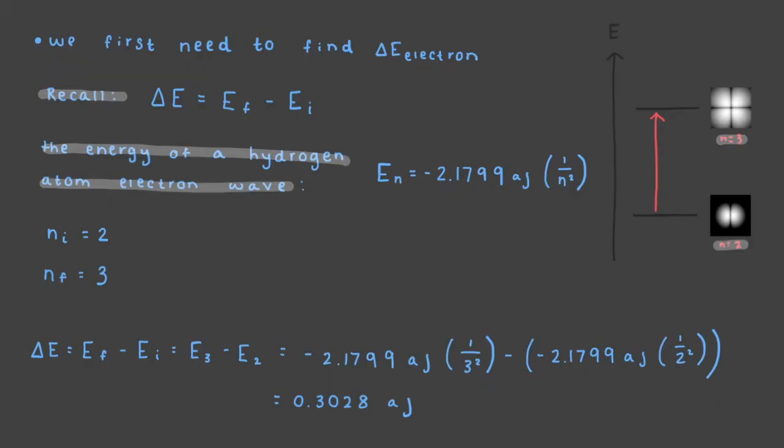But we're not done just yet. This is the change in energy of the electron, but we want to know about the light. Since it is the resonance between the light and the electron wave that causes the transformation of the electron, this energy change, 0.3028 attojoules, must also be equal to the photon energy of the light that causes the transformation.